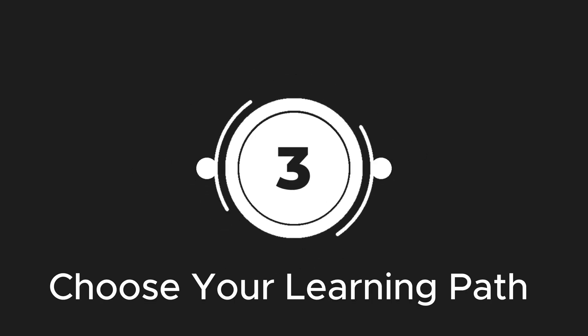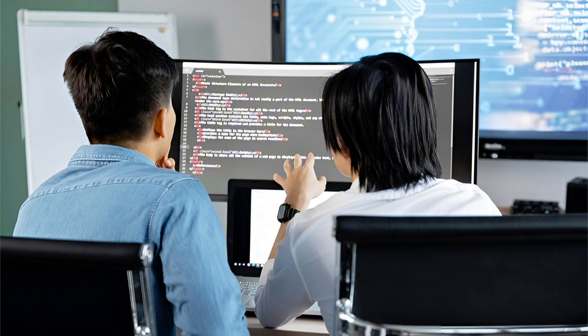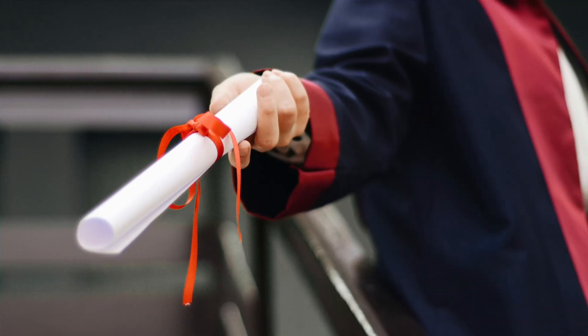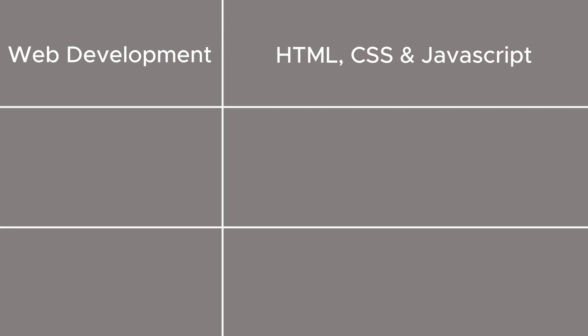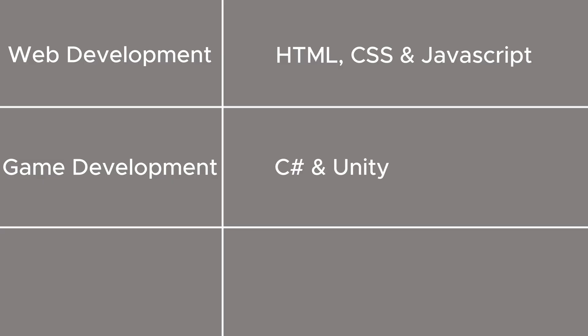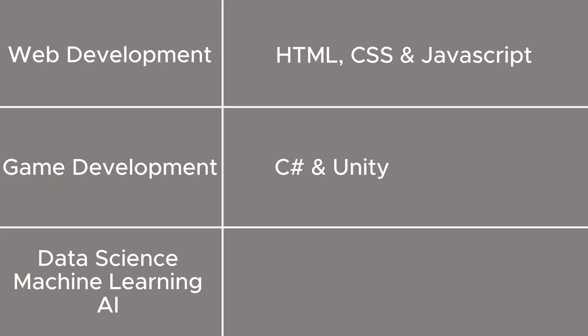Step 3: Choose how you want to learn. You can take the self-learning approach using resources online, go through a bootcamp with experts, or even get a degree in that field. Moving on in this video, I'll be talking about the self-learning approach. Once you have a roadmap, start with the programming language recommended for your field. For web development, start with HTML, CSS, and JavaScript. For game development, learn C# and Unity. For data science, machine learning, and the AI world, start with Python.